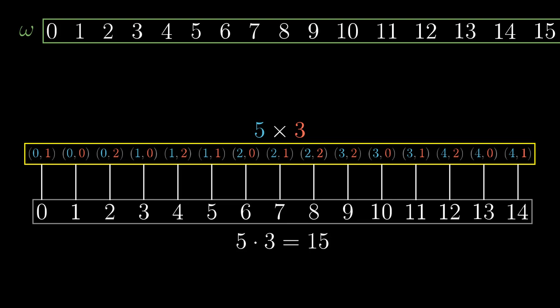Here we match up the Cartesian product with a set containing numbers 0 up to 14, so 5 times 3 equals 15.